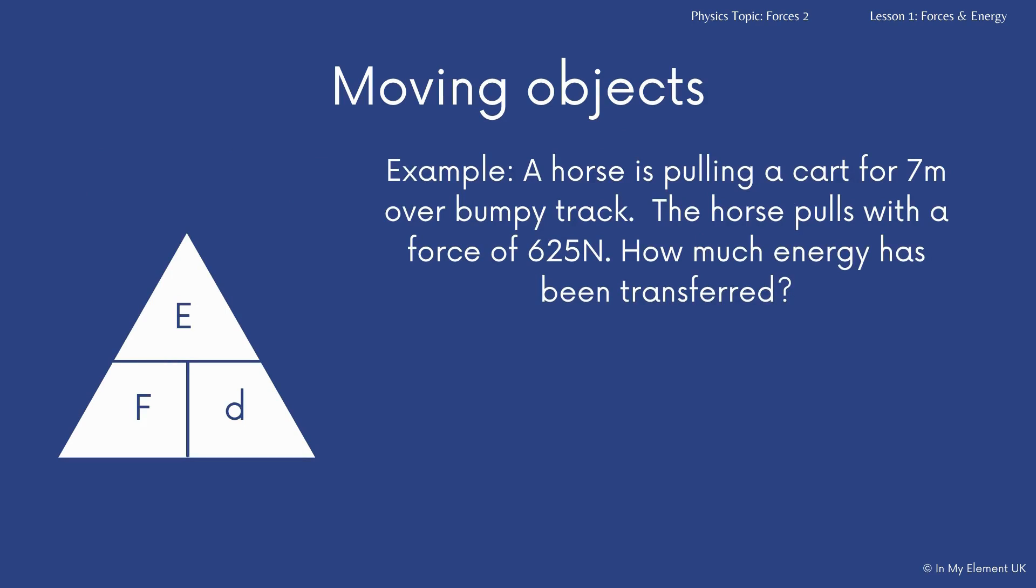But what we'll look at first is an example. So the horse is pulling a cart for seven metres over a bumpy track. The horse pulls with a force of 625 newtons. How much energy has been transferred?